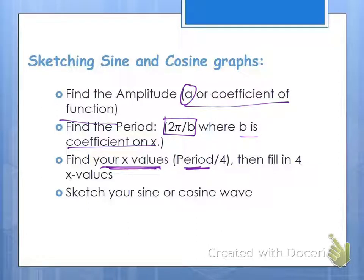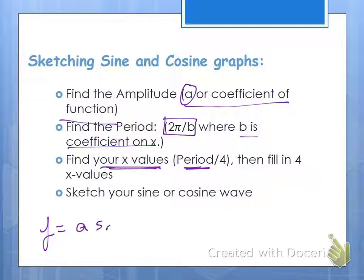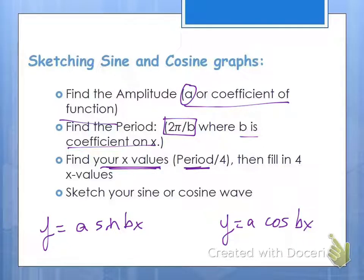We're going to want 4 tick marks in each cycle, so we know where to start, where to go, how to get to our highest and lowest value, hit 0, and get through our cycle. And then we can sketch the sine and cosine wave. So what we're looking for are generic functions where a is the coefficient on your function determining amplitude, and b is the coefficient on x affecting the period, which then affects the values we put on the x-axis.